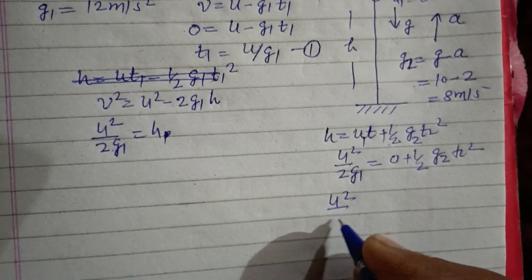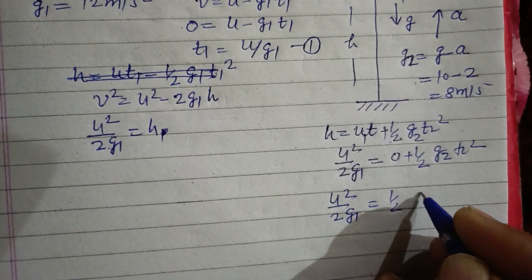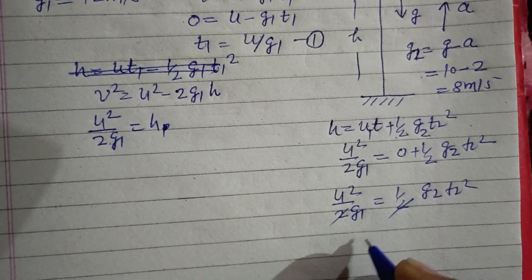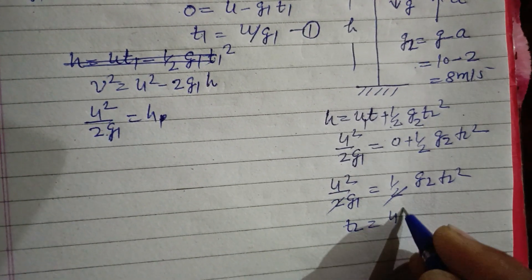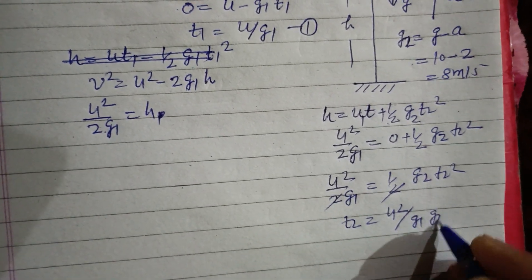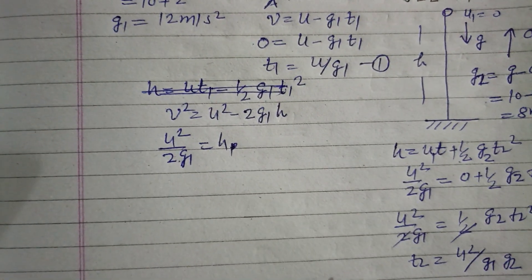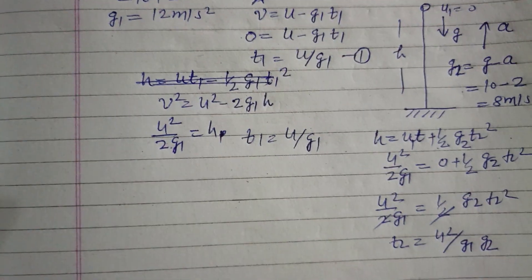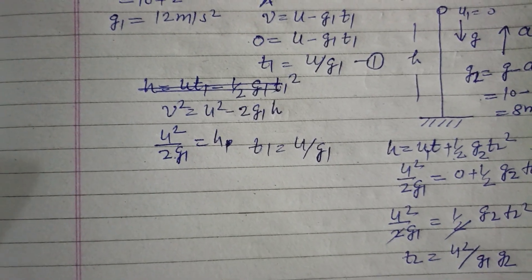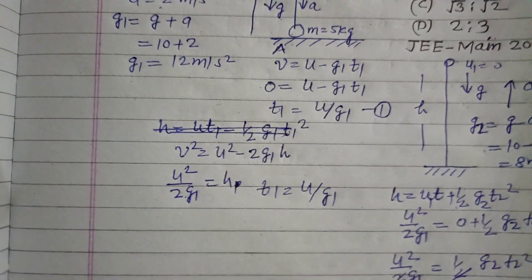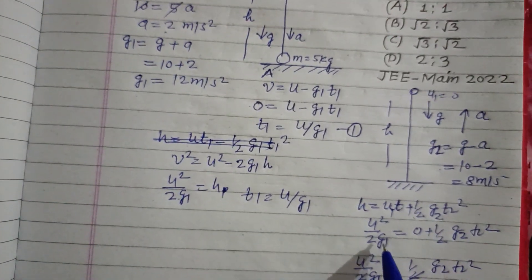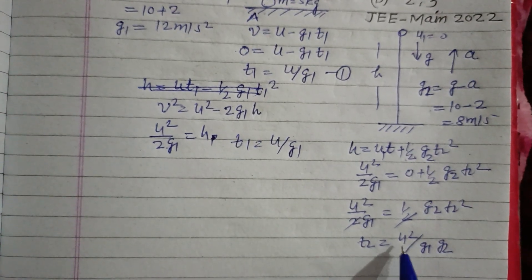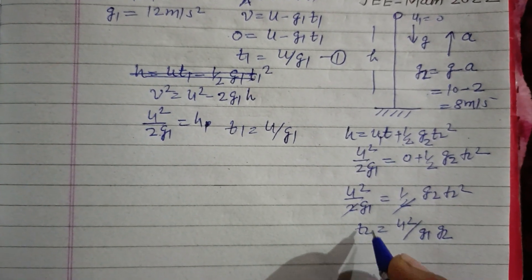So u squared upon 2 g1 equals half g2 t2 squared. Half cancels, we get t2 squared equals u squared upon g1 times g2. And t1 is u upon g1. Here h is u squared upon 2 g1, and this is t2 squared also.